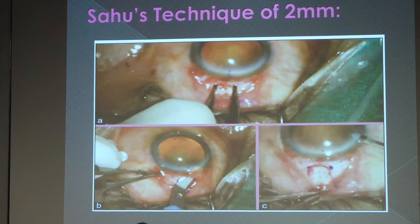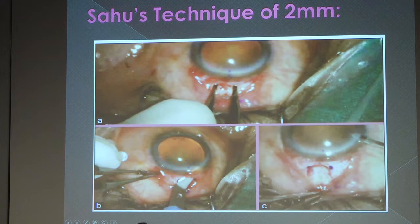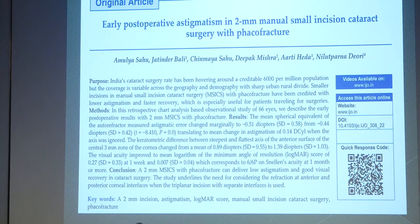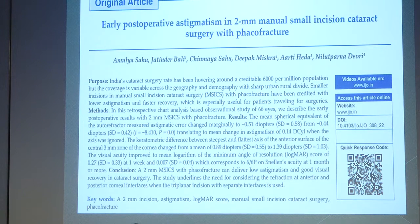Rawat sir developed techniques using 6.5–7mm scleral incisions and his own software to remove pre-existing astigmatism, published in IJO. The latest development is the 2mm technique — Sahu's technique with FACO fracture — showing good visual recovery compared to 6mm or 4mm incisions. A multicentric study comparing 2mm, 4mm and 6mm is ongoing, with results to be presented at the annual conference.